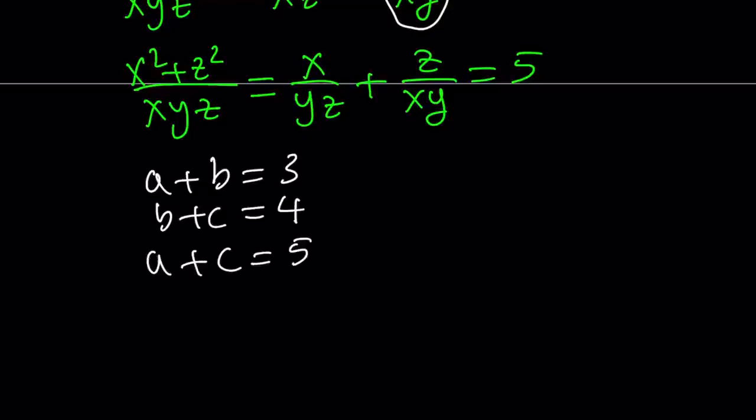Now, to solve this system, we have different methods. First method, for example, you can add the first two equations. That's going to give you A plus C plus 2B equals 7. We already know that A plus C is equal to 5. From here, you can find B equals 1. And by substitution, you can find everything else. That's one way to approach it.